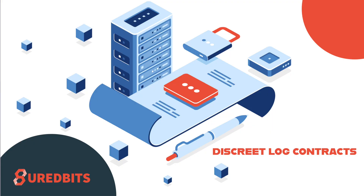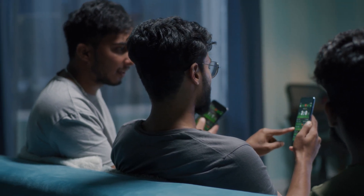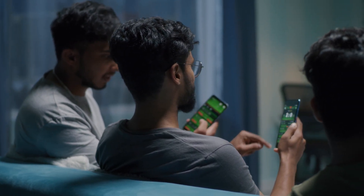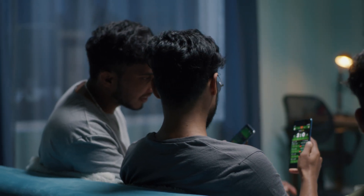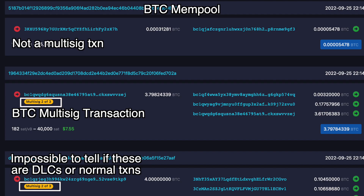The bottom line is that you can make peer-to-peer bets with anyone in the world. Your downside is capped at the amount of Bitcoin you put into the contract. And because it's private and multi-sig transactions look the same on the blockchain, it's going to be very hard to distinguish which transactions are DLCs and which ones are just regular multi-sig transactions — so all of this is pretty private.